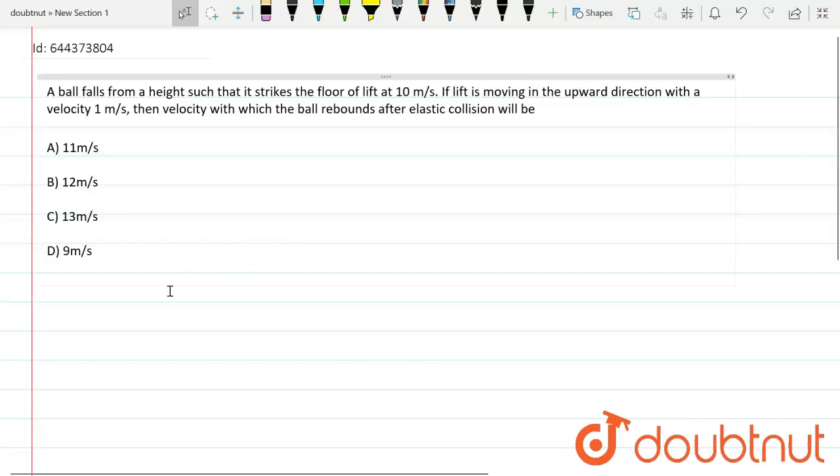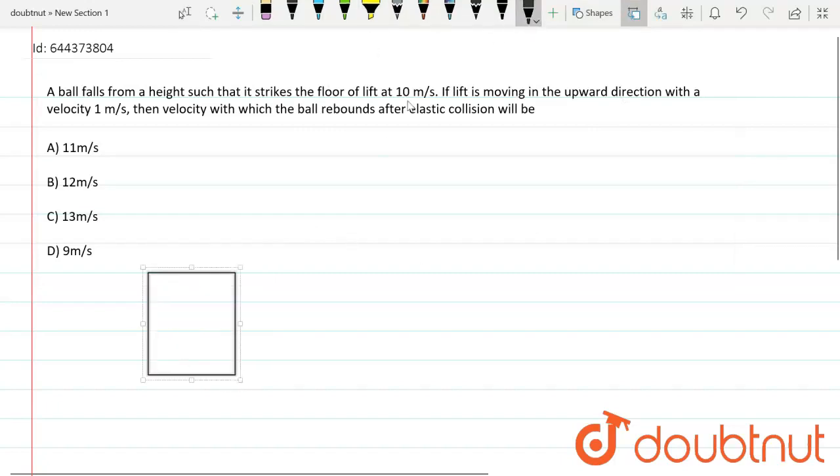A ball falls from a height such that it strikes the floor of lift at 10 meter per second. So if I try to draw, suppose this is the lift and there is an object, there is a ball here.